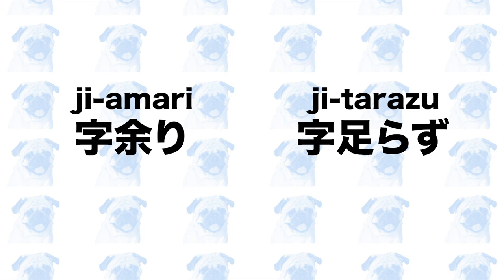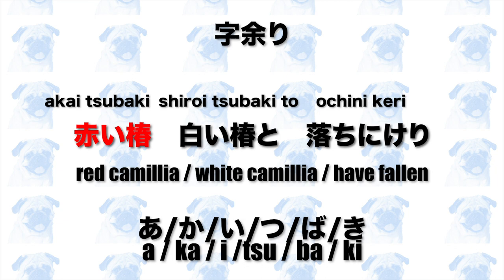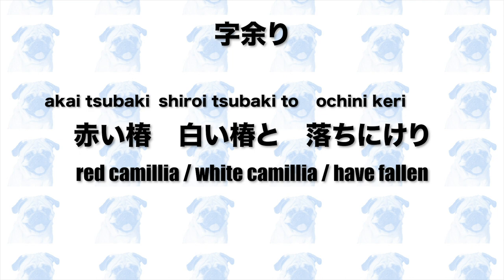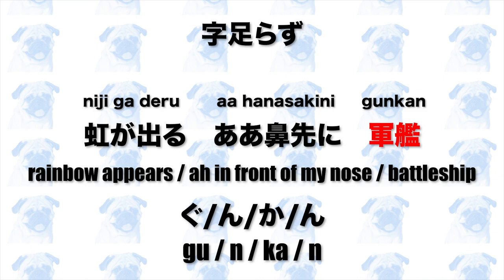Here are examples of jiamari and jitarazu. 赤い椿、白い椿と落ちにけり. In this haiku, the first phrase, 赤い椿, has six moras instead of five. Therefore, this haiku is jiamari. Next: 虹が出るああ花先に軍艦. The last phrase of this haiku, 軍艦, has four moras instead of five — making it jitarazu.